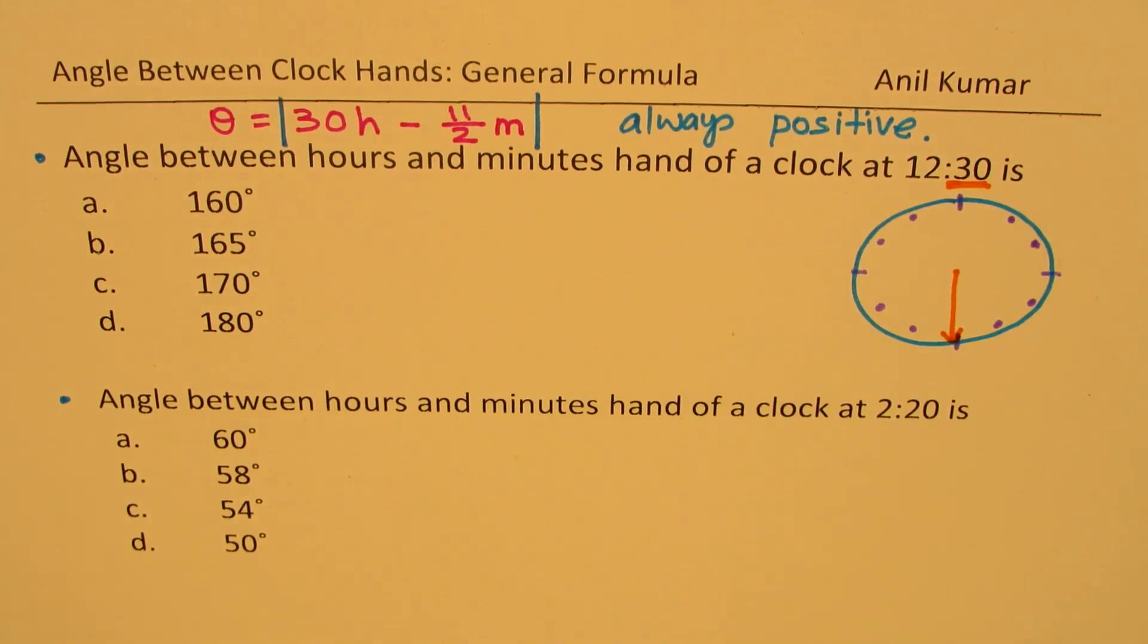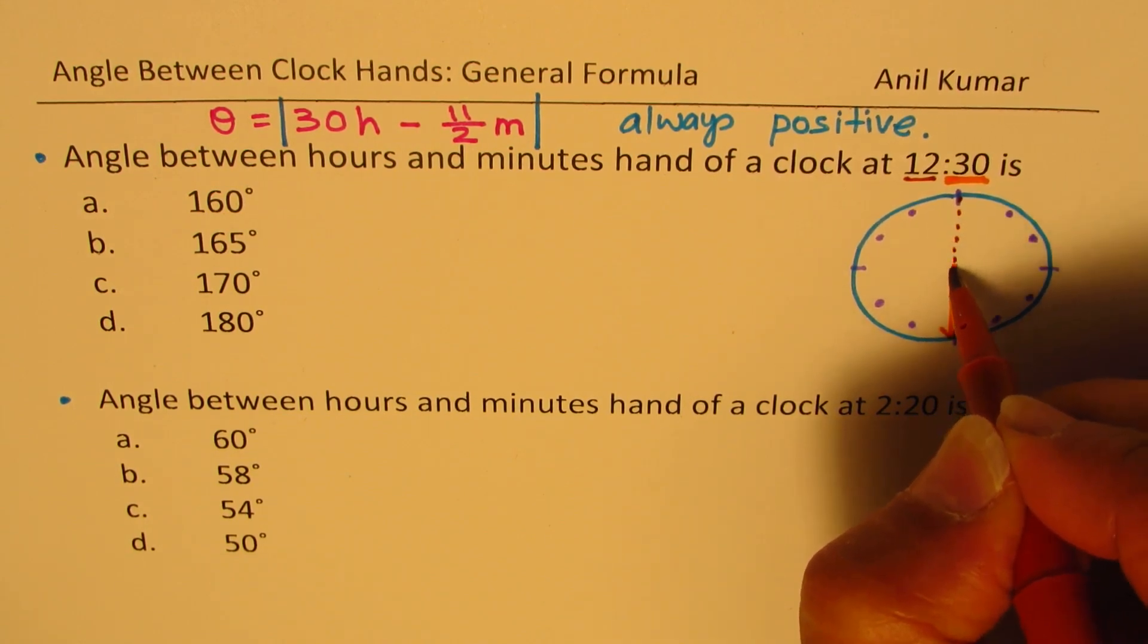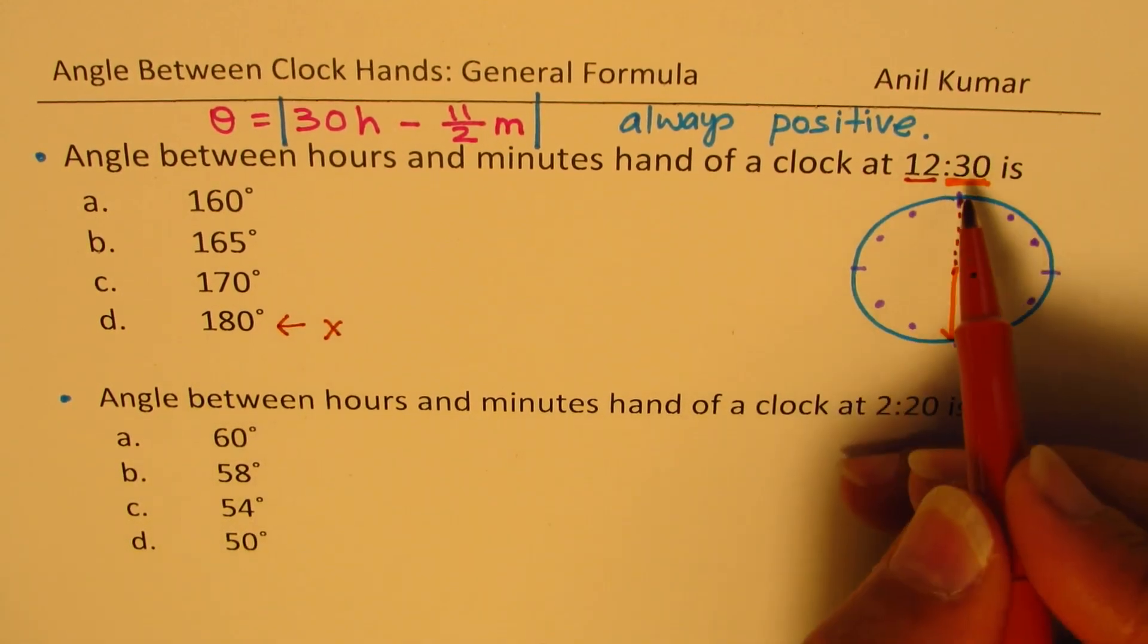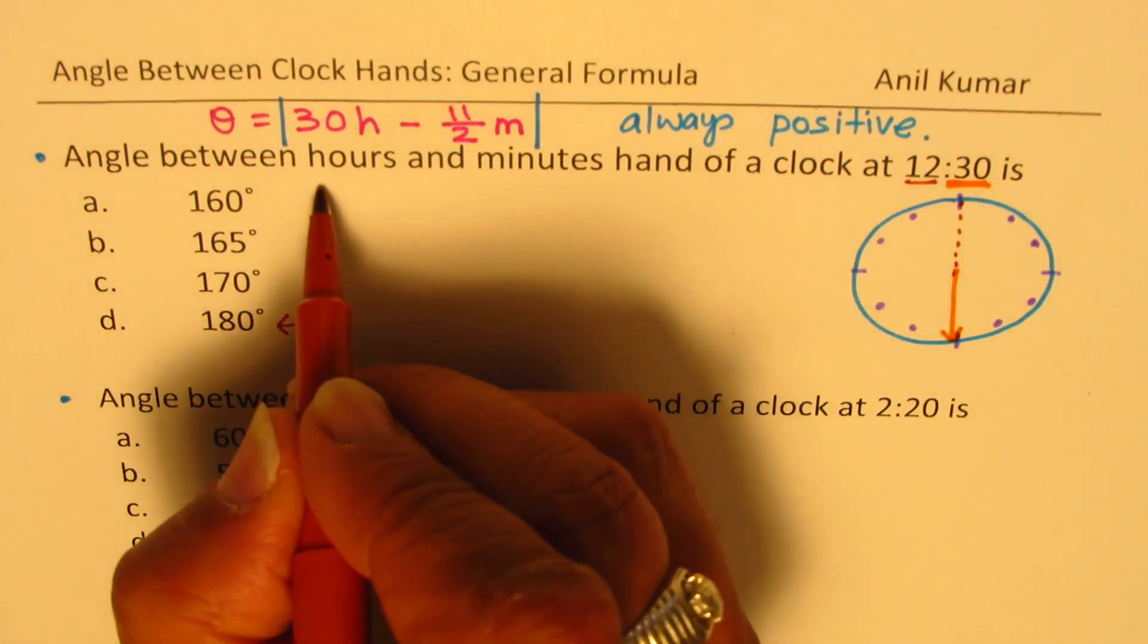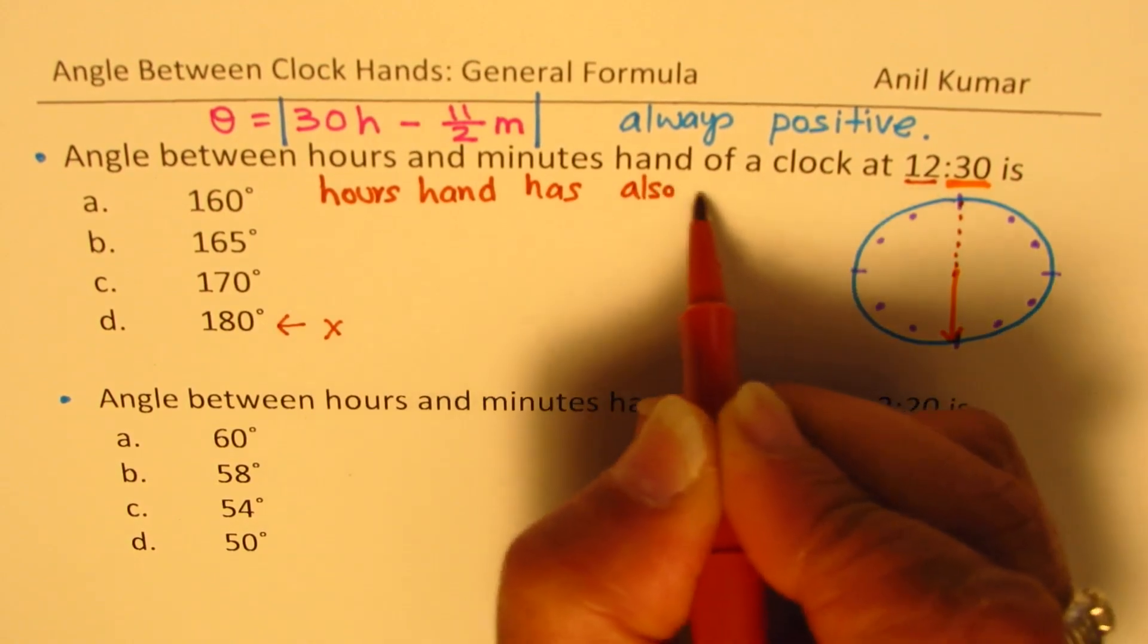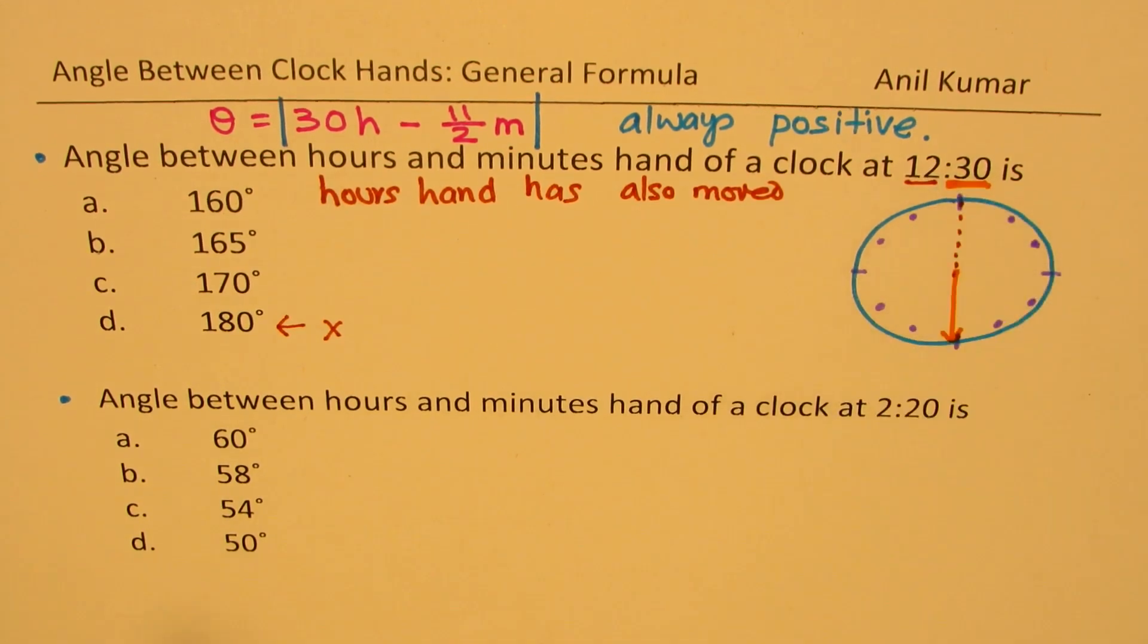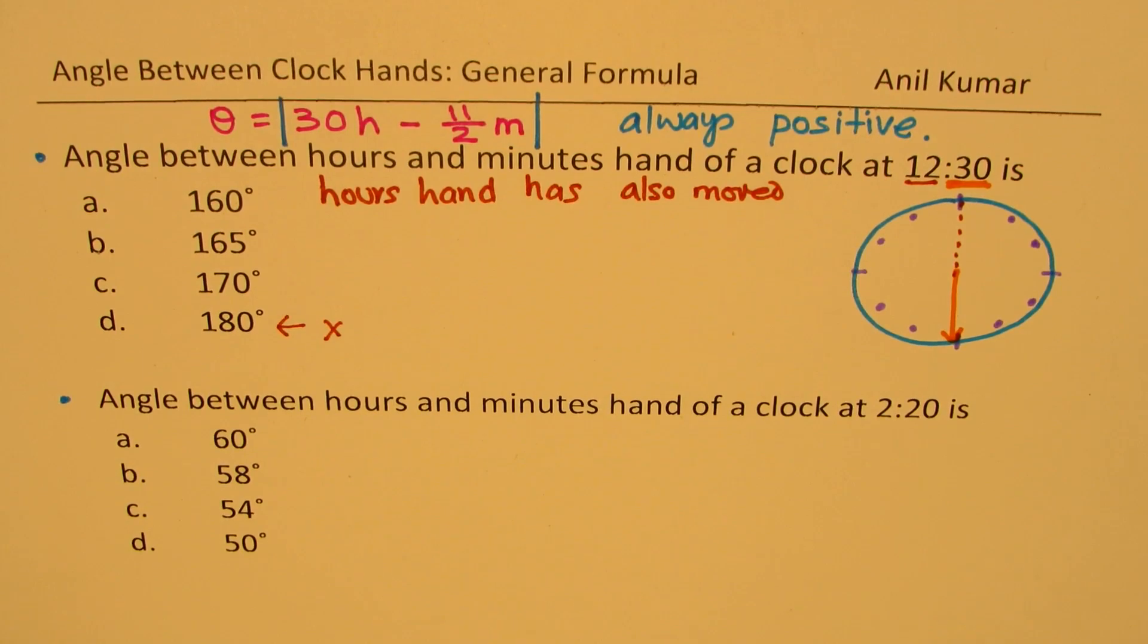As far as the hours arm is concerned, it is not at 12. If it was at 12 the answer would have been this. But that is the wrong answer because in 30 minutes hours arm has moved. So the hours hand has also moved. So we don't know where. So that is what we need to figure out. This is simple. You can say it is somewhere in between and you can guess your answer. But let us understand this strategy.